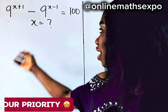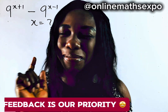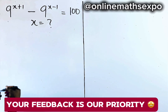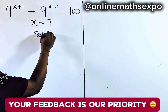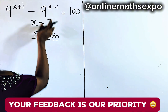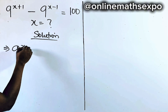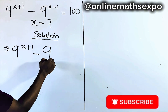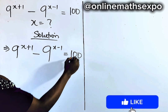Hello, lovely one. Welcome. Let's solve this beautiful equation step by step — it's just so easy. So we're going to begin with our solution. We have 9 to the power of x plus 1, minus 9 to the power of x minus 1, is equal to 100.